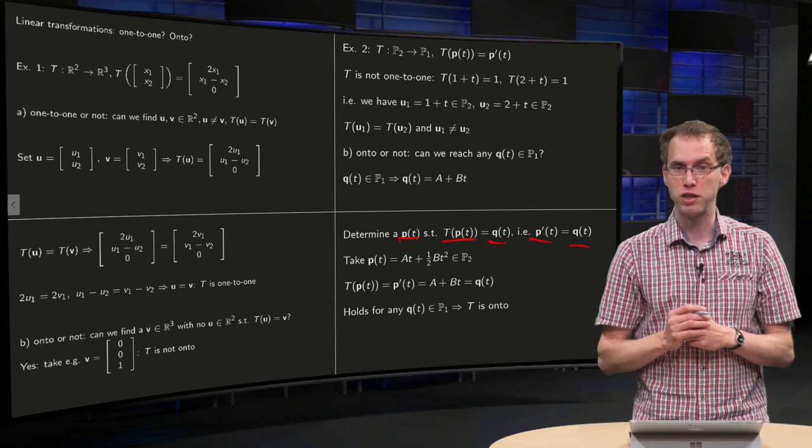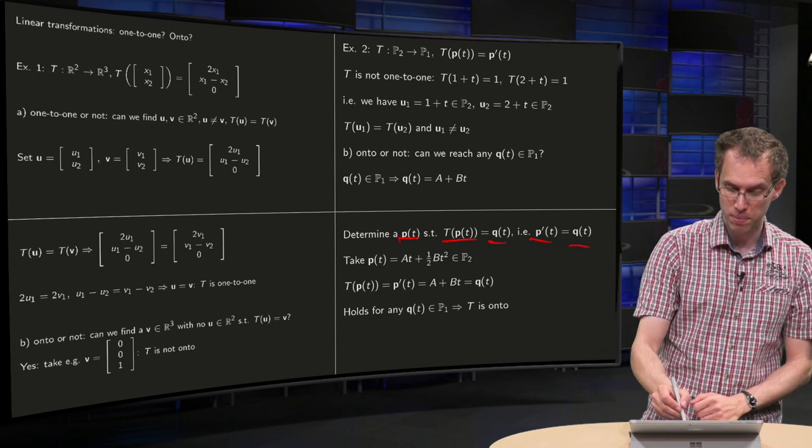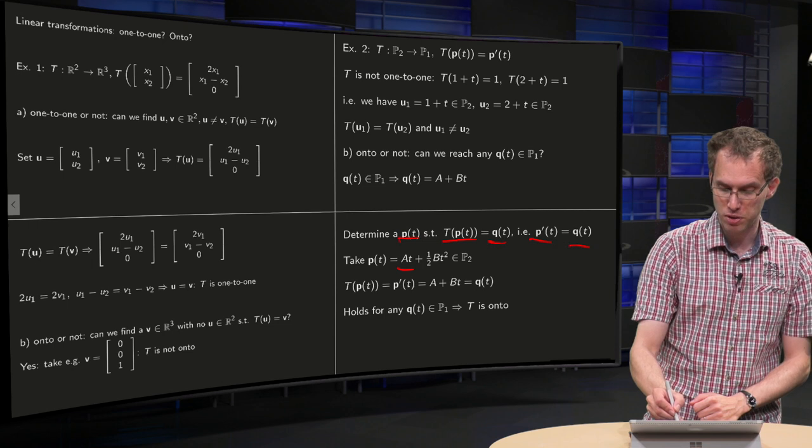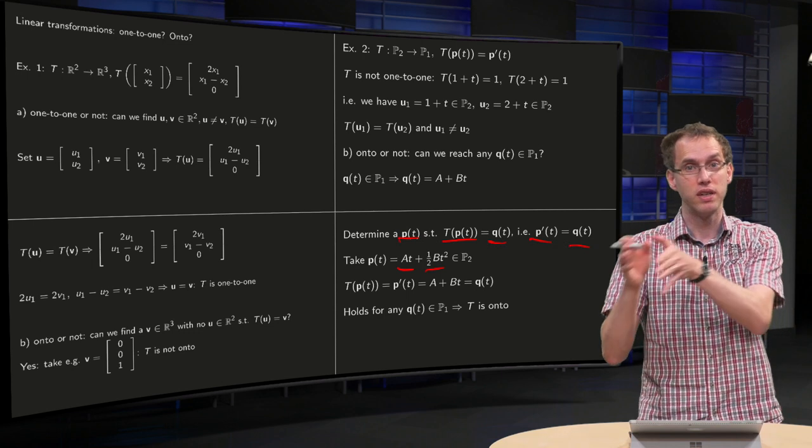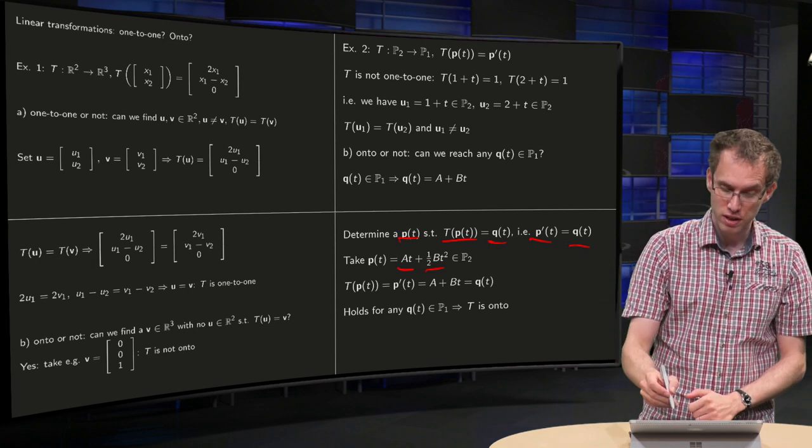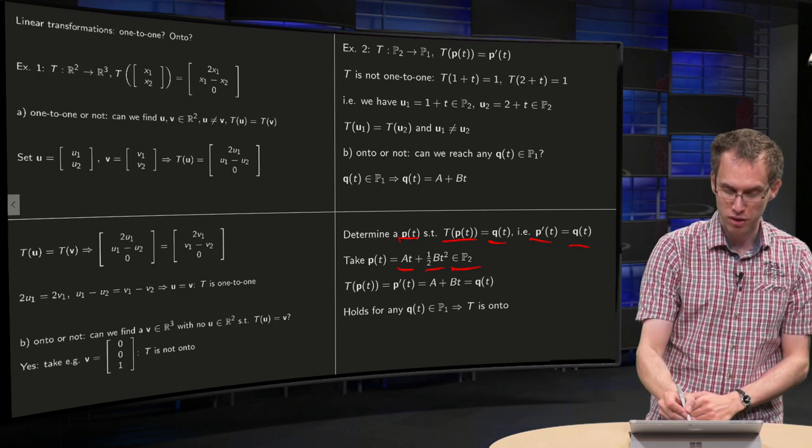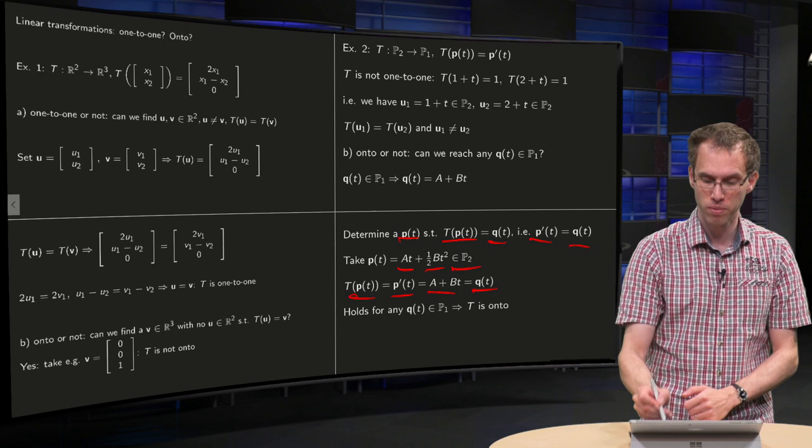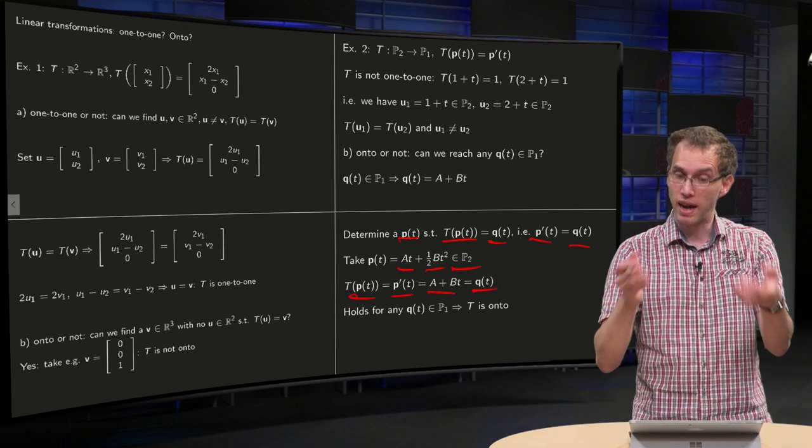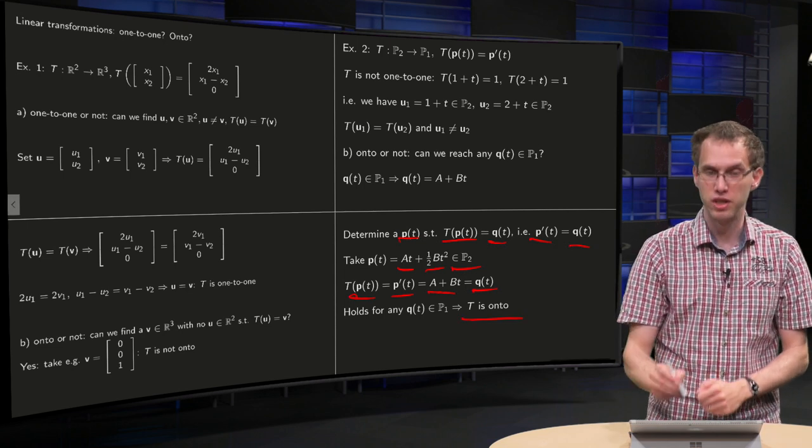We can find this p by taking the antiderivative of q. If we take p(t) equals a times t plus one half b times t squared, then the image of this p is exactly our q. This p is in P₂, so it is in the domain. The image of this p equals p prime equals a plus b times t equals q. We can do this for any q, so we can reach any q in P₁, so this T is onto.